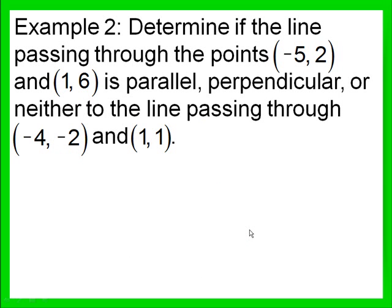Example 2: determine if the line passing through the points negative 5, 2 and 1, 6 is parallel, perpendicular, or neither to the line passing through the points negative 4, negative 2 and 1, 1. Again, our formula for slope: y sub 2 minus y sub 1 over x sub 2 minus x sub 1.